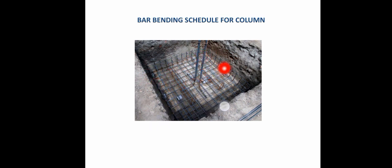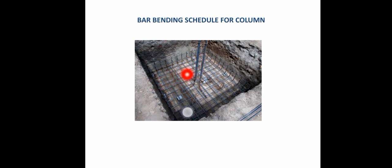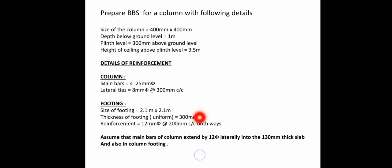What kind of bars are these? 12mm bars are provided both ways in the footing — both the distribution bar and the main bar provided below are 12mm. Both ways means 12mm bars are provided in both directions. Also, assume that the main bars of the column extend by 12.5d into the 130mm thick slab above.